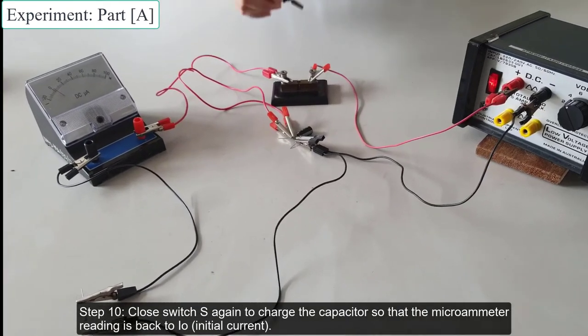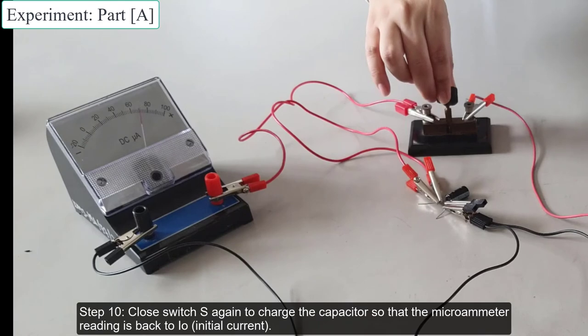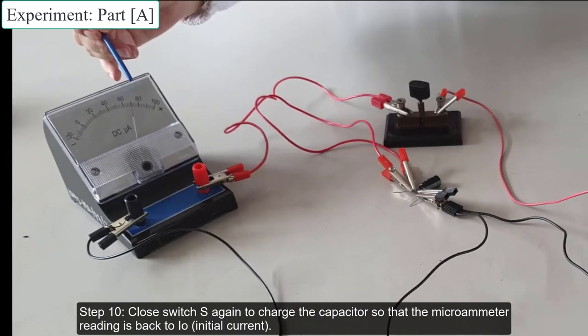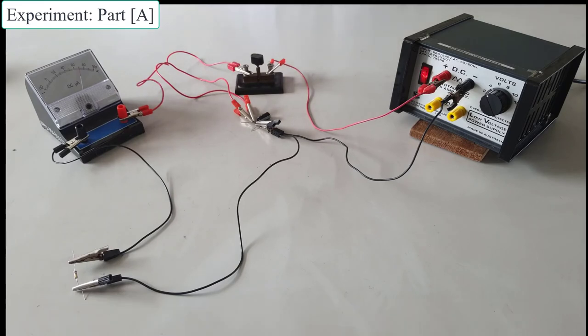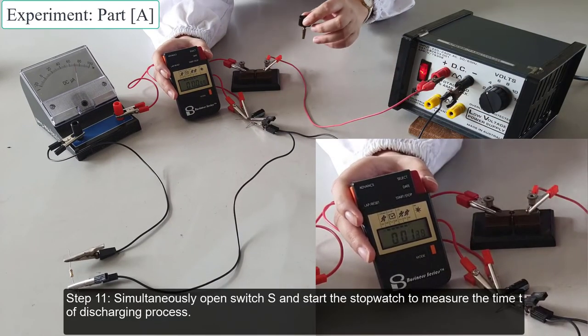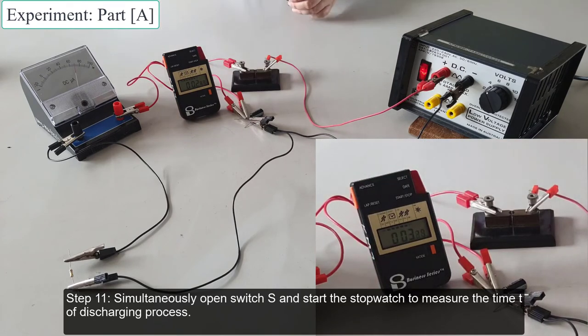Close switch S again to charge the capacitor so that the microammeter reading is back to I not. Simultaneously, open switch S and start the stopwatch to measure the time T of discharging process.